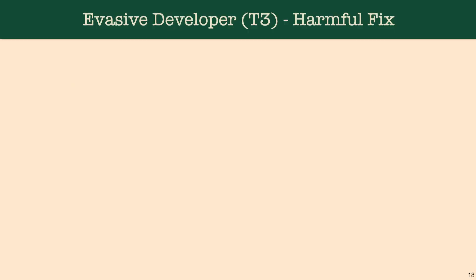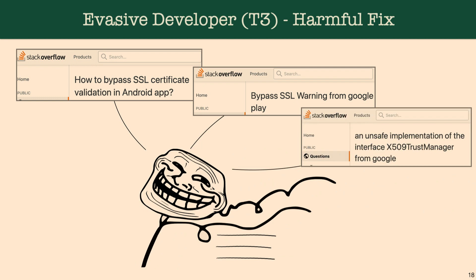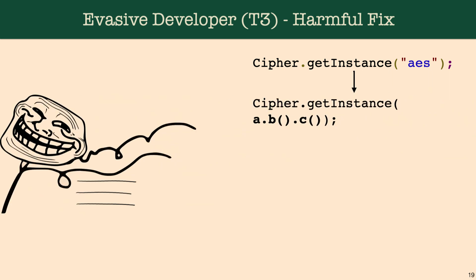Finally we have threat model actor 3: the evasive developer with a harmful fix. These are developers who are trying to compromise their own codebase because they don't have the intention to fix things, or just want to do a quick job and be done with it. They are purposefully trying to evade cryptodetector reports. A T3 developer might try to do something like use method chaining to accomplish this.